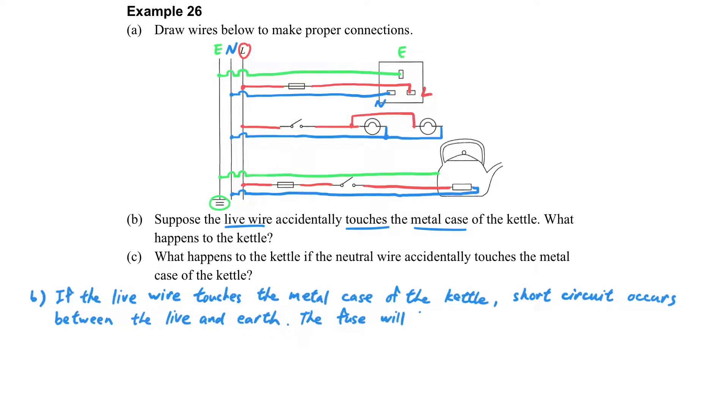Because the earth wire side has zero potential and the live wire has high potential, with the whole path having very low resistance, high current will appear and a short circuit occurs. That's why the fuse will blow due to the large current, and the kettle will stop working.